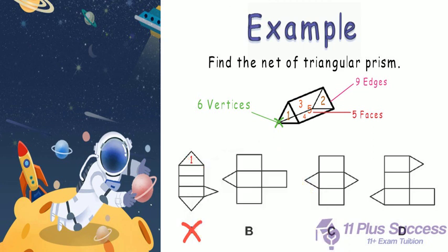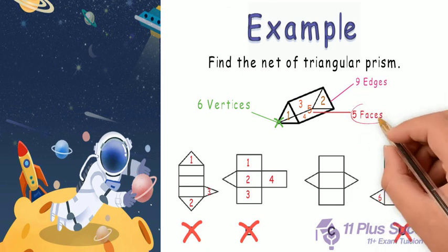Net A cannot be our answer, as it has 3 triangular faces. Net B cannot be our answer because it has too many rectangular faces. Net D is totally invalid, as it has 6 faces, but the prism net should have 5 faces.